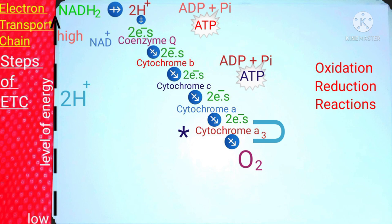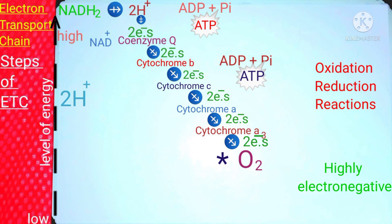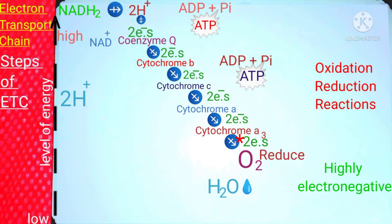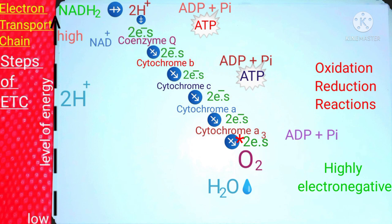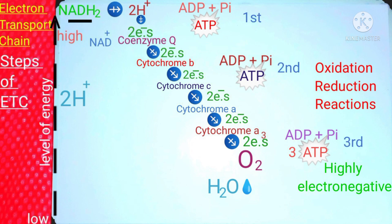When electrons are transferred from cytochrome A3 to molecular oxygen — which is highly electronegative — the oxygen receives these electrons and combines with the protons previously separated from the two hydrogen ions, producing a water molecule. This reduction of oxygen releases high energy that is utilized to combine ADP with inorganic phosphate, generating the third ATP molecule. So from one molecule of NADH2 we obtain three ATP molecules — from one ETC cycle we get three ATPs.